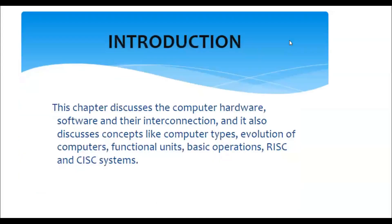This chapter discusses computer hardware, software, and their interconnection. It also discusses concepts like computer types, evolution of computers, functional units, basic operations, and RISC and CISC systems.